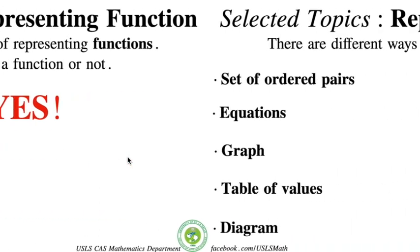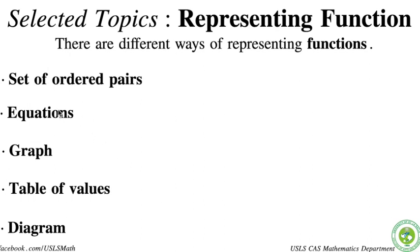That ends our video for today. Just a recap. So we have different ways to represent functions. We have used the ordered pairs, the one that we did before. Equations. We will talk about this more on the next topic using our functional notation and the rest of it, how to evaluate functions and such. Graph, using the vertical line test. There's the table of values, which is pretty much the same with the ordered pairs. And the diagram, of course. So thank you so much. Hope you will try to follow our YouTube channel and subscribe to our Facebook page. It's written here. And hope you get something here. Thank you.